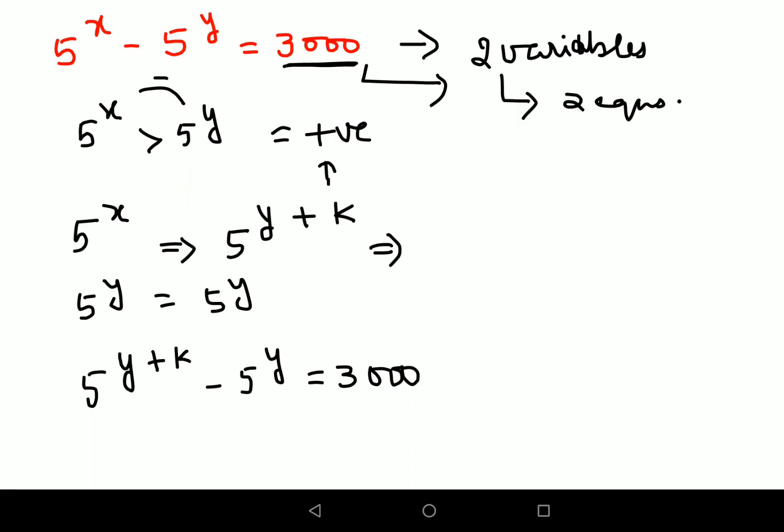So now you're going back. I can say that 5 raised to Y is nothing but what? Y equals to 3 and X is equals to what? Y plus K. That is what? 3 plus K was what? 5 square. That is 2. So can I say therefore I can say X equals to 5.